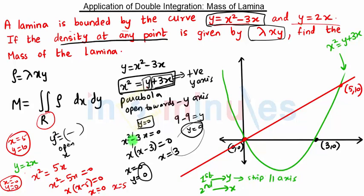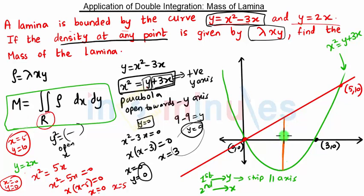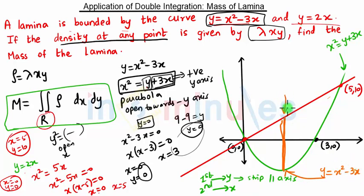Only the formula of mass is going to change; the procedure remains the same as we used to solve in area problems. We will consider one strip parallel to the y-axis to cover this entire area. The lower end of the strip is on the parabola: y = x² - 3x, and the upper end of the strip is on the line: y = 2x. These are the lower and upper limits of y.